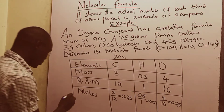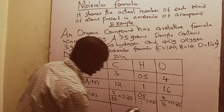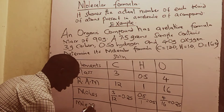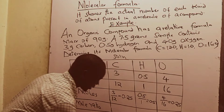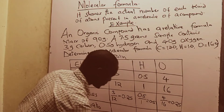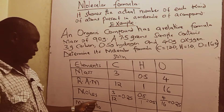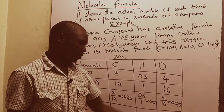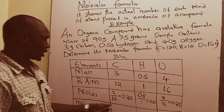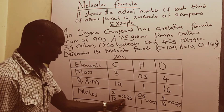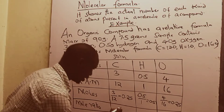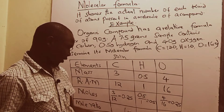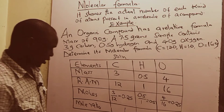After getting the moles, we go on to calculate what we call the mole ratio. To get the mole ratio, we divide by the smallest. The moles of carbon is 0.25, that of hydrogen is 0.5, and that of oxygen is 0.25. The smallest among these values is 0.25. So 0.25 divided by 0.25 gives us 1, then 0.5 divided by 0.25 gives us 2, and 0.25 divided by 0.25 gives us 1.